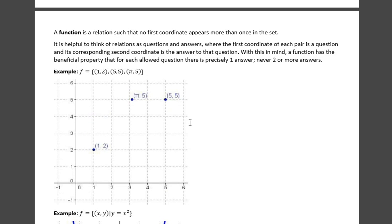A function is a relation such that no first coordinate appears more than once in the set. It is helpful to think of relations as questions and answers, where the first coordinate of each pair is a question and its corresponding second coordinate is the answer to that question.